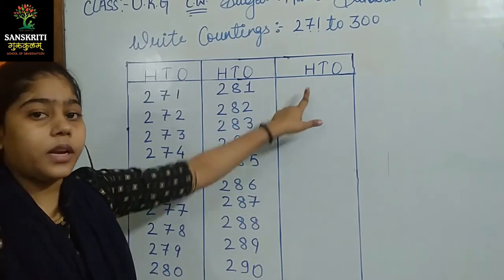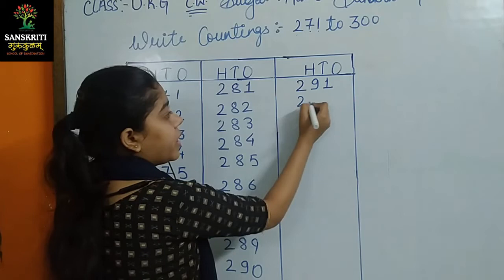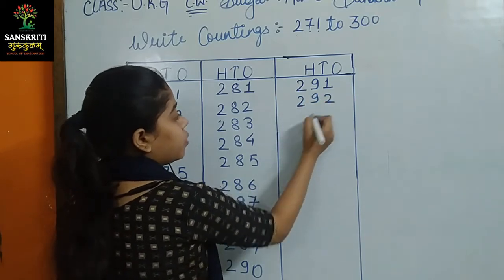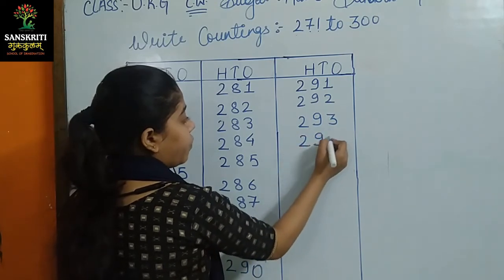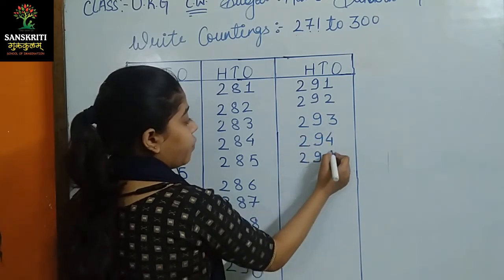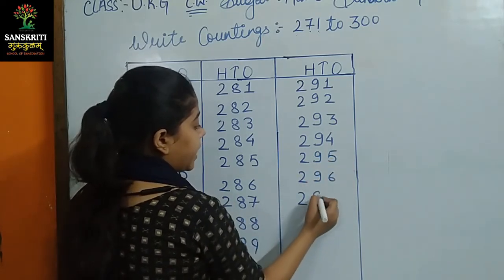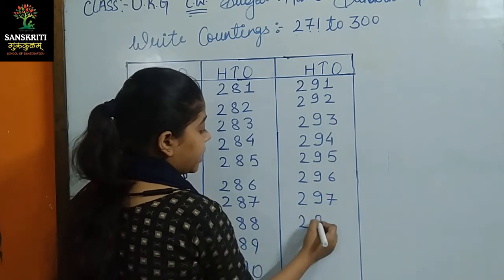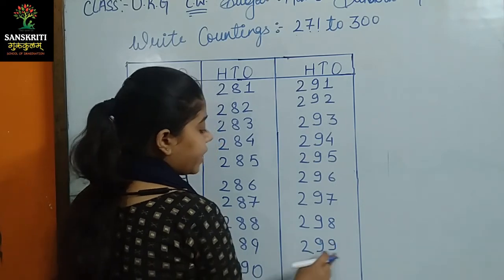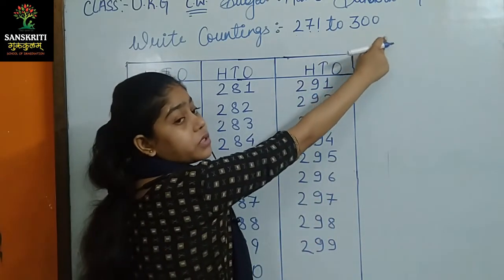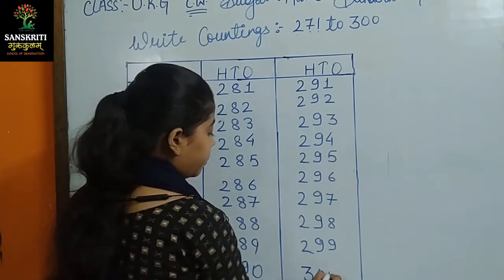290. 290 के बाद क्या होगा? 291. हम यह लिखेंगे: 291, 292, 293, 294, 295, 296, 297, 298, 299 के बाद आएगा हमारा लास्ट — 300.